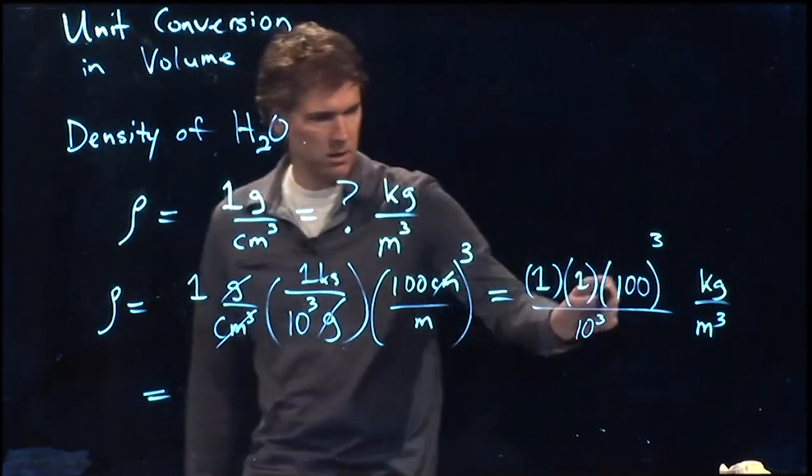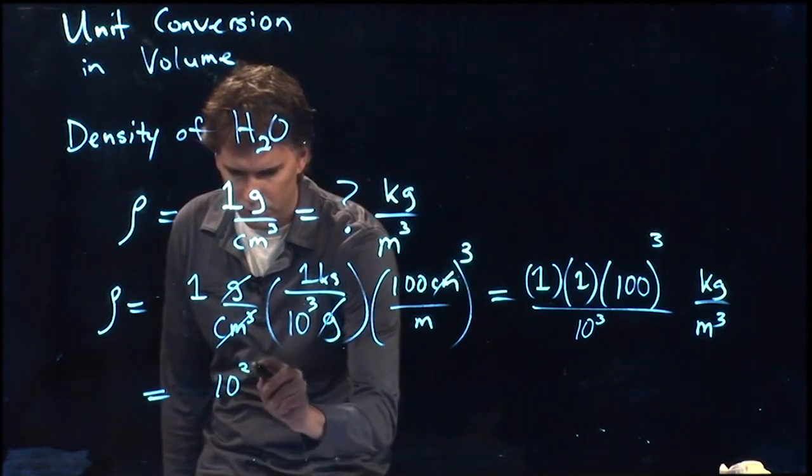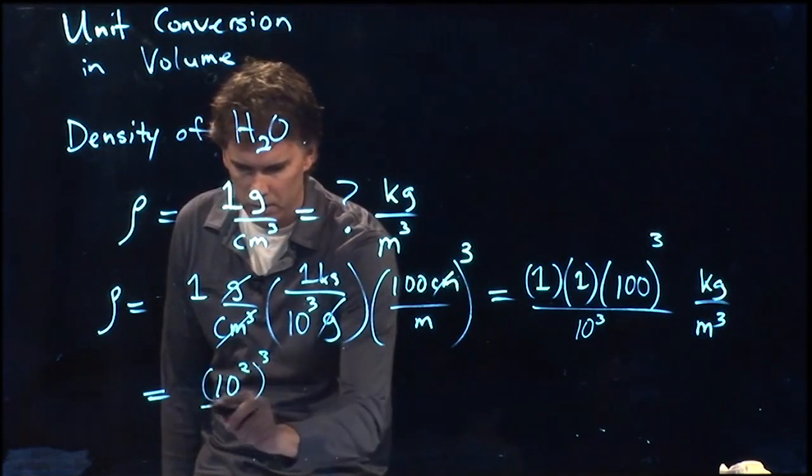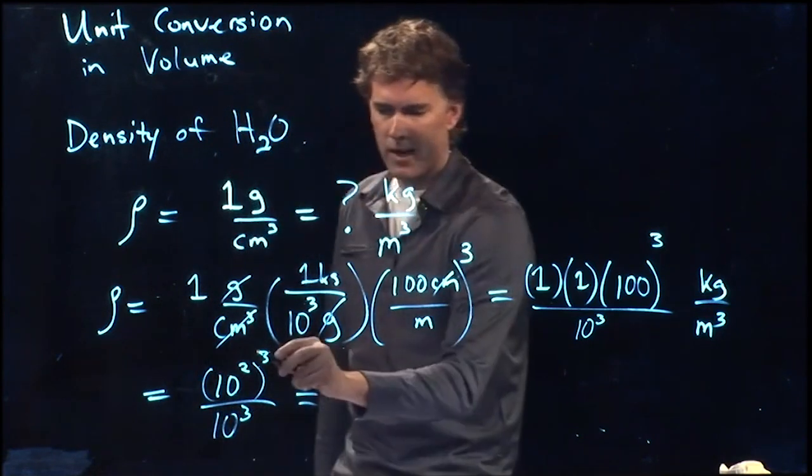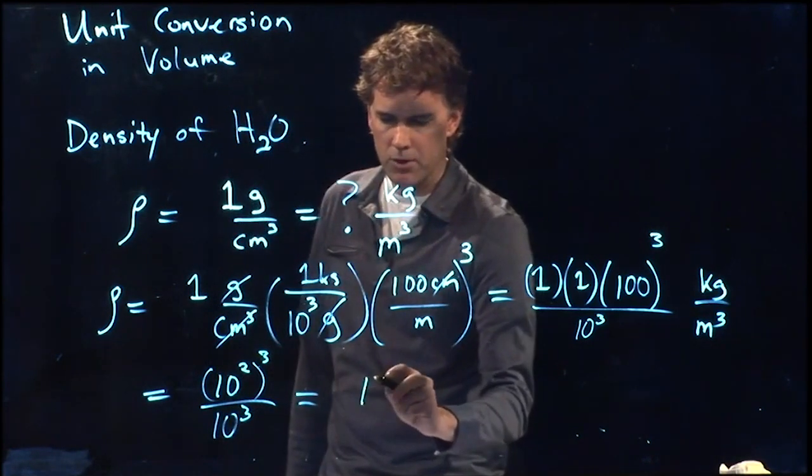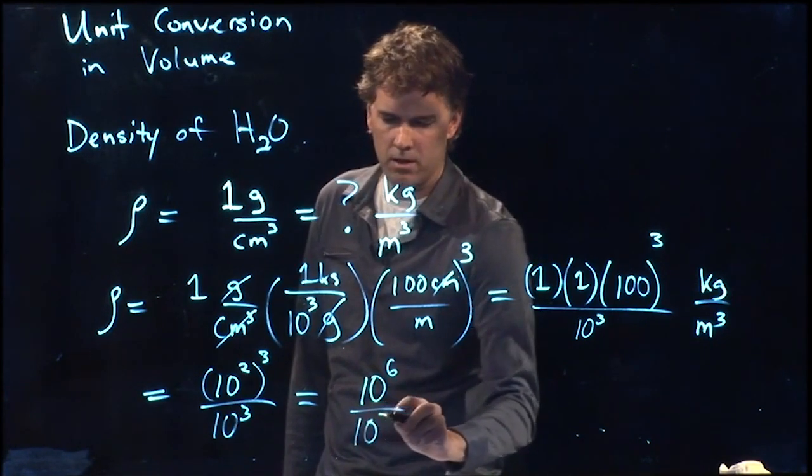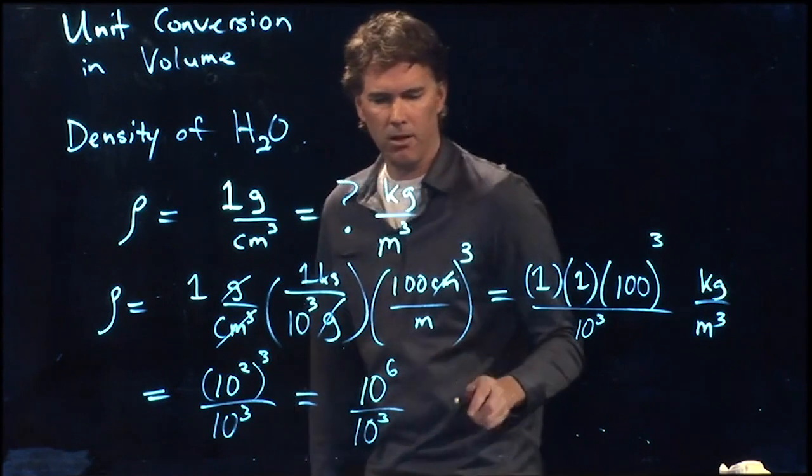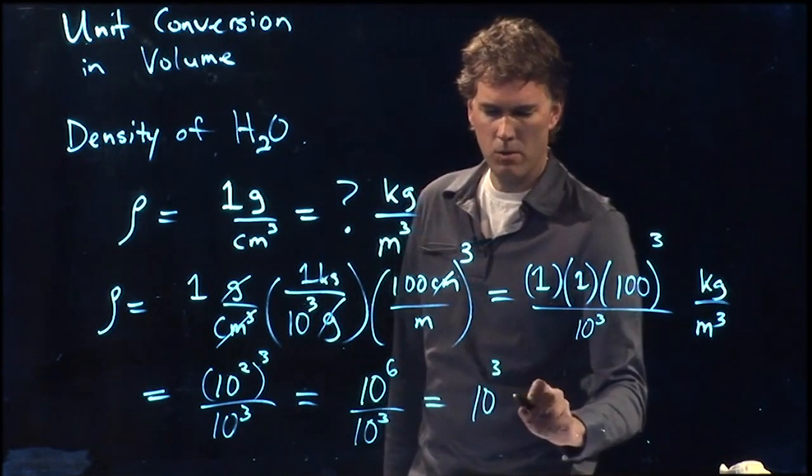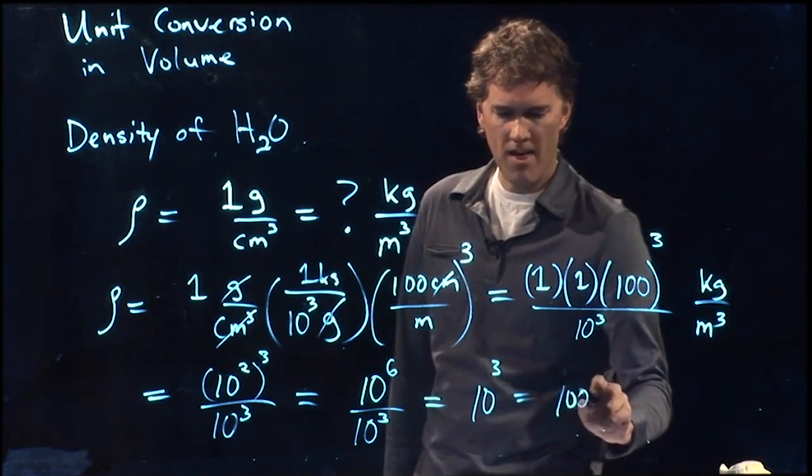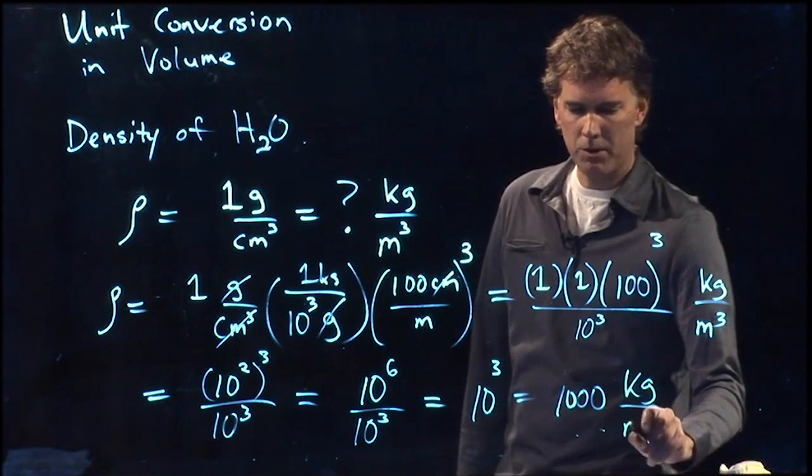And so what do we get? Well, 100 cubed is the same as 10 to the 2 cubed. And we have a 10 to the 3 in the bottom. If I take something like 10 to the 2 and I cube it, it becomes 10 to the 6. And I divide by 10 to the 3. And I get 10 to the 3, which is 1,000 kilograms per cubic meter.